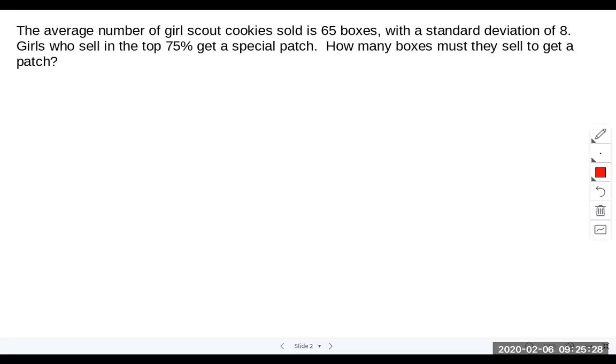Okay, so let's look at this question. It says the average number of Girl Scout cookies sold is 65 boxes with a standard deviation of 8. Girls who sell in the top 75% get a special patch. We want to know how many boxes they must sell to get a patch.